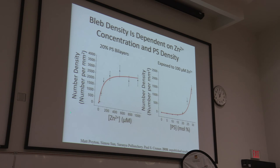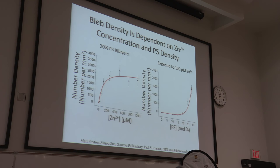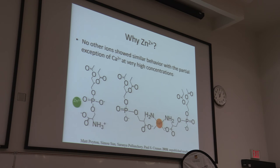Looking at the number density of these blebs as a function of zinc concentration with 20 mole percent PS in the membrane, the number of blebs comes up and levels out — expected because only so many PS lipids have been added. Holding zinc concentration constant and changing PS concentration: without any PS in the membrane there are no blebs, but the count rises as PS is added. So this blebbing phenomenon is specific to having both PS and zinc in the membrane. The question is: why is zinc causing these three-dimensional structures to form at this interface?